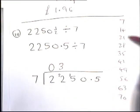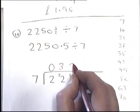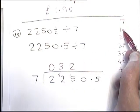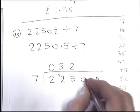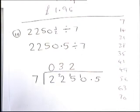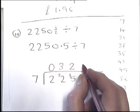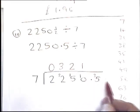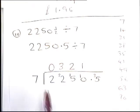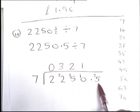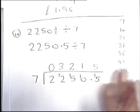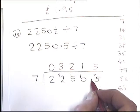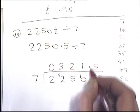Now it's 7 into 15: two 7s are 14, so 7 goes twice with a remainder of 1. Next is 7 into 10: 7 goes once with a remainder of 3. That 3 goes onto the next digit — it doesn't matter that it's after the decimal point, it still carries over. 7 into 35: 35 is the fifth entry in the 7 times table, so 7 goes exactly 5 times with no remainder.